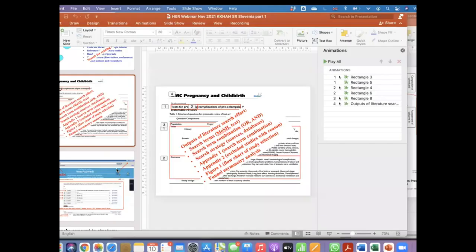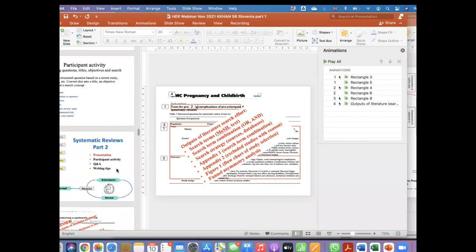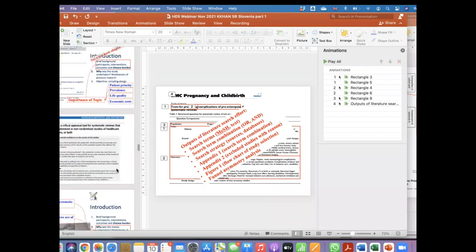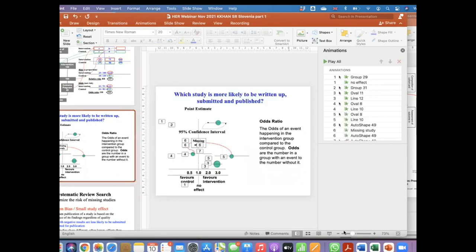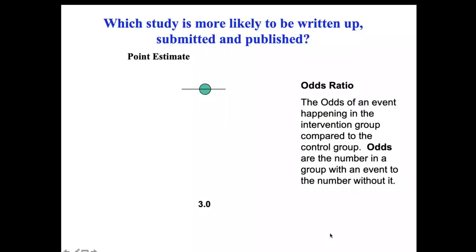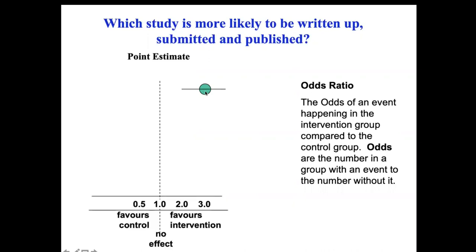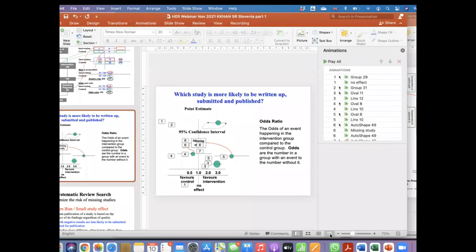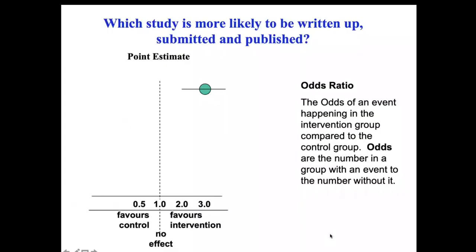We'll briefly go over this one more time to ensure that you've picked this up correctly. I demonstrated how the point estimate of odds ratio is calculated, and from this point estimate I plotted it on what is called a forest plot, where we have the scale of a forest plot. I wanted to explain once again how effect size was used to evaluate the risk of publication bias.